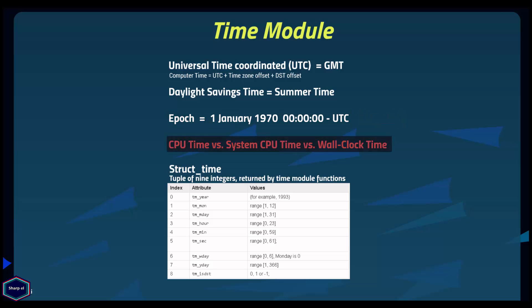What are CPU time, system CPU time, and wall clock time? CPU time, also called user CPU time or execution time, is the amount of time the CPU worked on the program, excluding other overheads. System CPU time is the amount of time the process spent on operating system functions connected to that specific program. Wall clock time, also called elapsed or running time, is the total time to execute a program and includes user CPU time, system CPU time, and time needed for other operations like accessing memory and even sleep time.